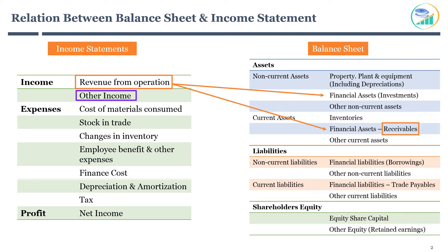This is essentially the income generated from activities other than the company's core business. Financial assets on the balance sheet generate income in the form of dividends and interest. Income associated with such financial investments is shown as other income.